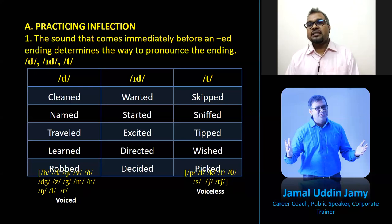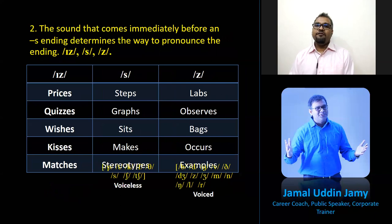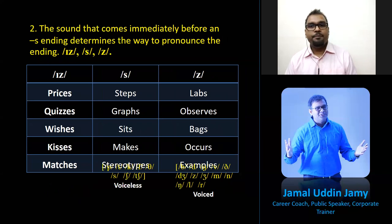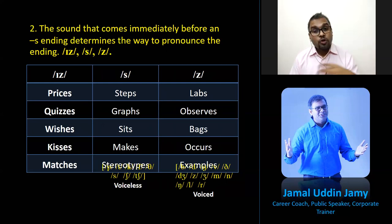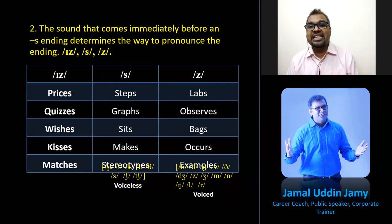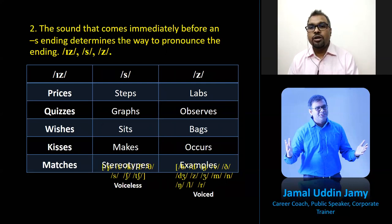Let's go to the second rule of inflection. The sound that comes immediately before an -s or -es ending determines the way to pronounce it: 'is,' 'sir,' or 's.' This is the same mistake made in the subcontinent. For example: 'prices,' not 'prices'; 'quizzes,' not 'quizzes'; 'wishes'; 'kisses'; 'matches'; 'buses' — all take the 'iz' sound. Say 'buses,' 'kisses,' 'wishes,' 'quizzes,' 'matches,' 'prices,' 'practices,' 'catches.'